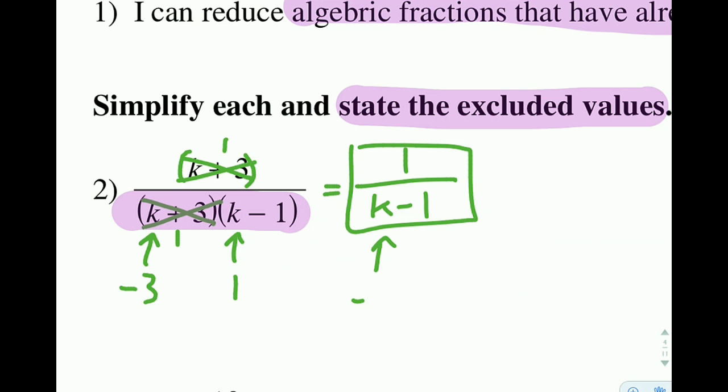Even though in this problem here, the negative 3 doesn't show up as an issue, there's something called holes in your graph. So if you were to draw this graph, there'd be a little tiny blip at negative 3. And that's something that we need to watch out for.